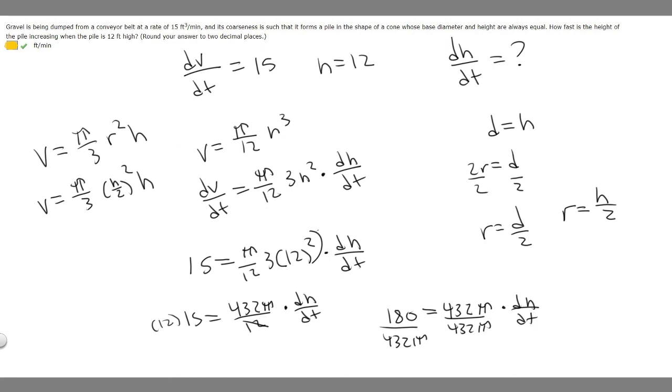So 180 divided by 432π. Plug that in your calculator, you'll get 0.1326. We're only rounding to two decimal places, so this rounds to 0.13. So dh/dt is 0.13. The answer to this problem is 0.13 feet per minute.